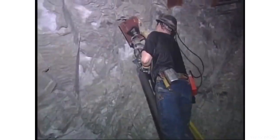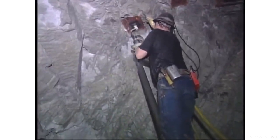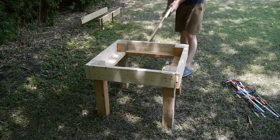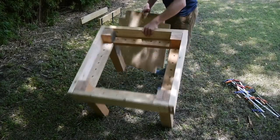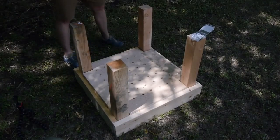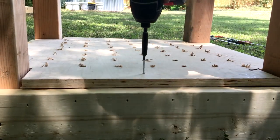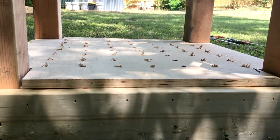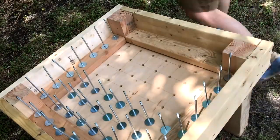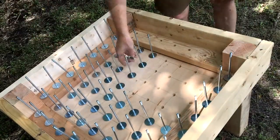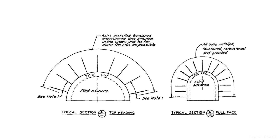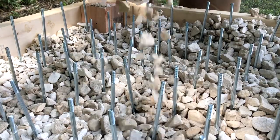Rock bolts are a type of reinforcement for stabilizing rock excavations, usually made from steel bars or bolts. I built this demonstration to show how they work. This is essentially the frame of a table, but the top is completely open. I attached a bottom to the frame to represent temporary shoring of a tunnel roof. Even though our permanent support system doesn't rely on this, it's necessary until we get the rock bolts installed. My rock bolts are just actual bolts with large fender washers to spread out the load. You can see that I space them out into a nice grid pattern. Actual rock bolts are similarly installed in a pattern along a tunnel.